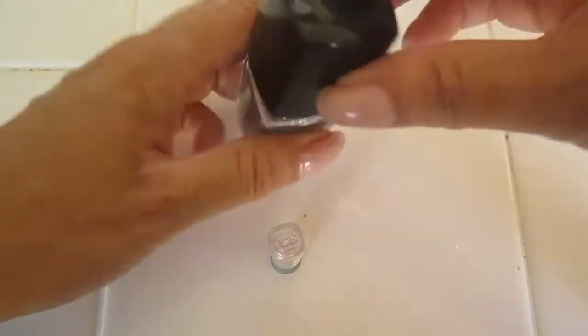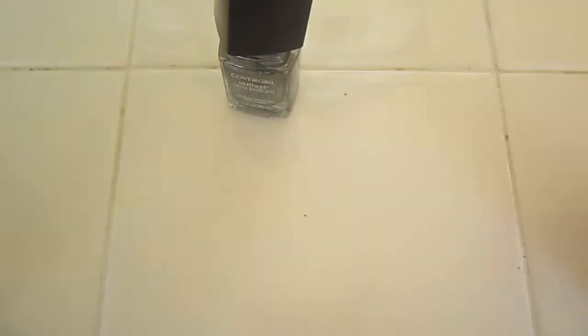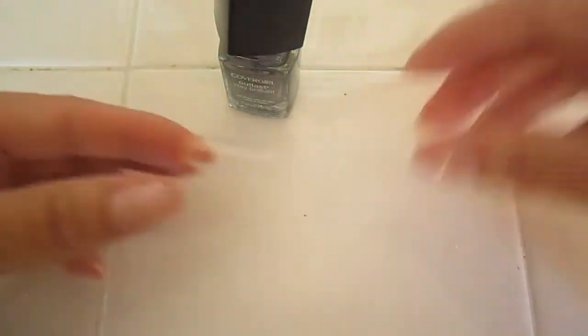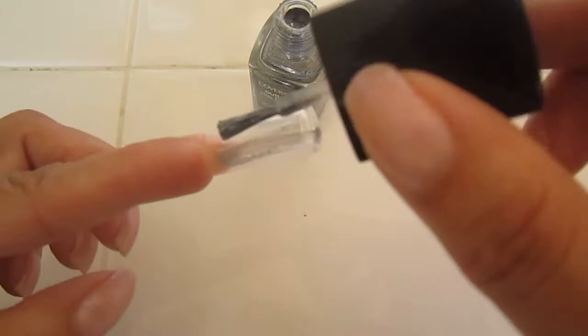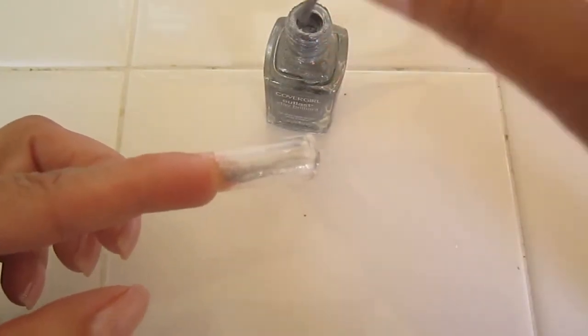I'll start by applying a thin coat of metallic silver nail polish. I chose this one because I wanted to look as if the base was made of metal.